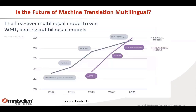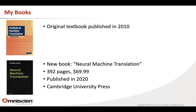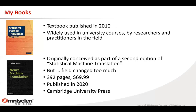Facebook also built a machine translation system for multiple languages and developed a lot of technology in this space. At WMT — one of the premier MT competitions — they managed to beat the best bilingual systems even among high-resource languages with a multilingual system. If you want to know more about the technology, I wrote two textbooks: one on statistical machine translation from 2010, which is now a bit dated, and a newer book on neural machine translation published last year by Cambridge University Press. With that, I'll hand over to Dion.